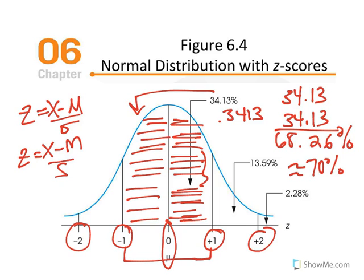The math behind this is at the level of calculus and it's not necessary for us to know all of those intricate mathematical procedures. We just need to understand that if we're working with anything that's normally distributed, these proportions will always be the same. Approximately 70% of the scores fall within one standard deviation unit above and below — that's the majority of scores, and visually it makes sense because that's where the highest frequency is occurring.